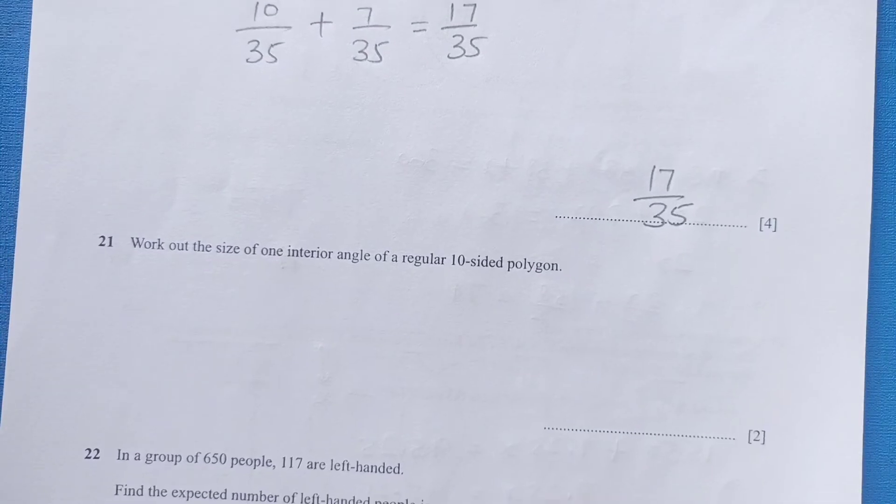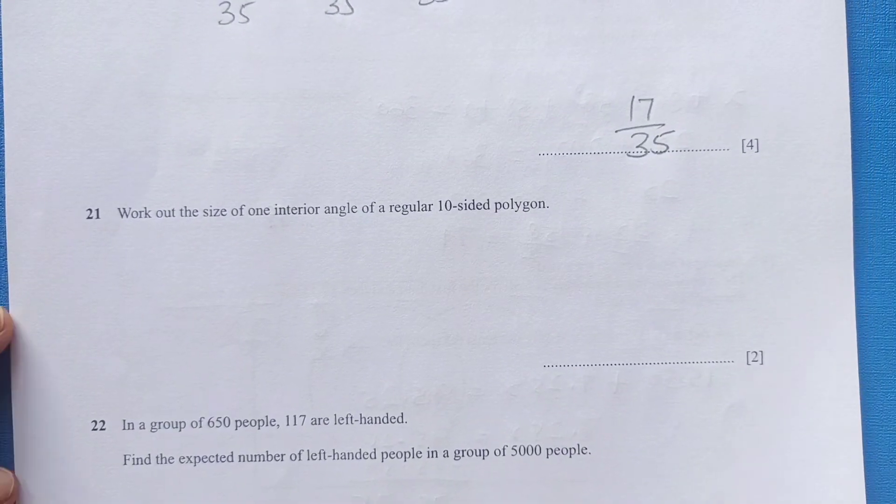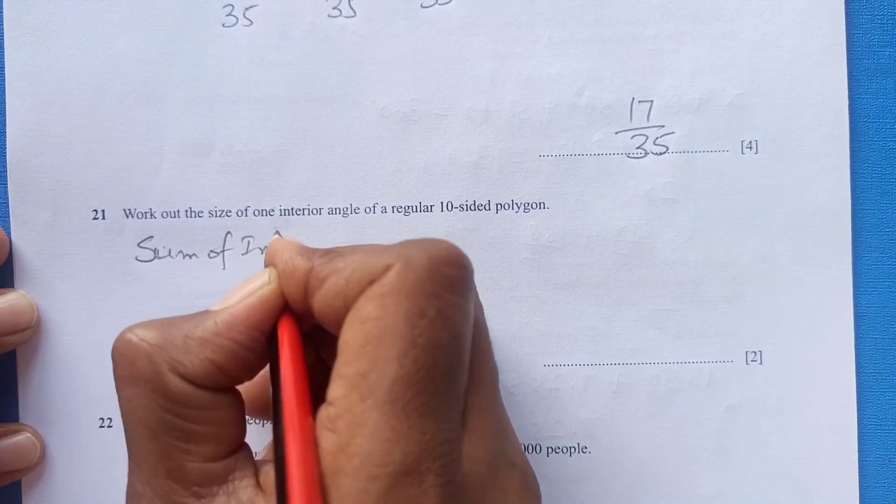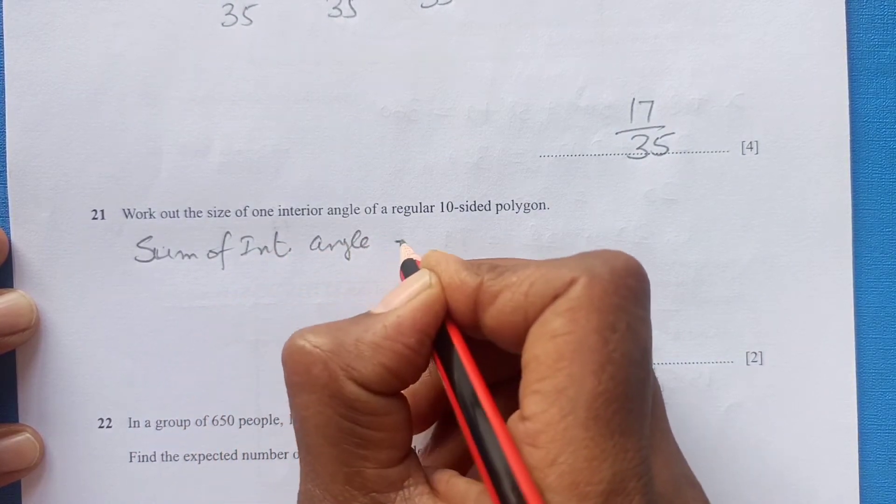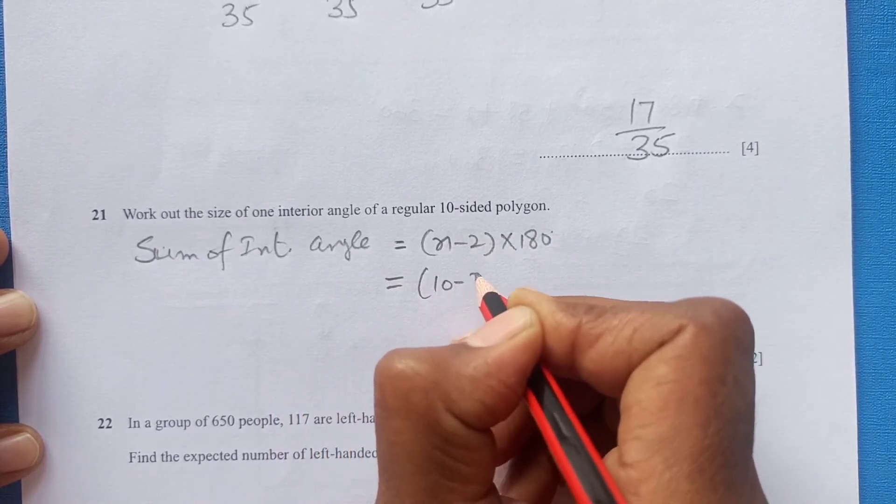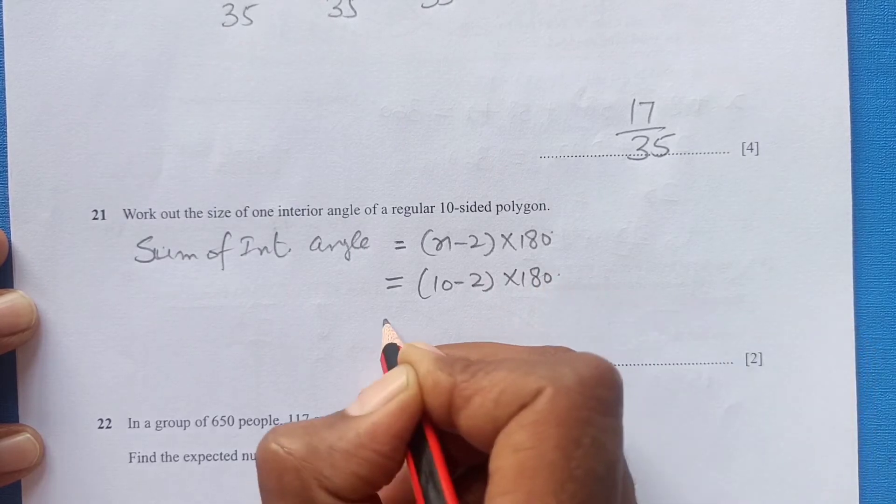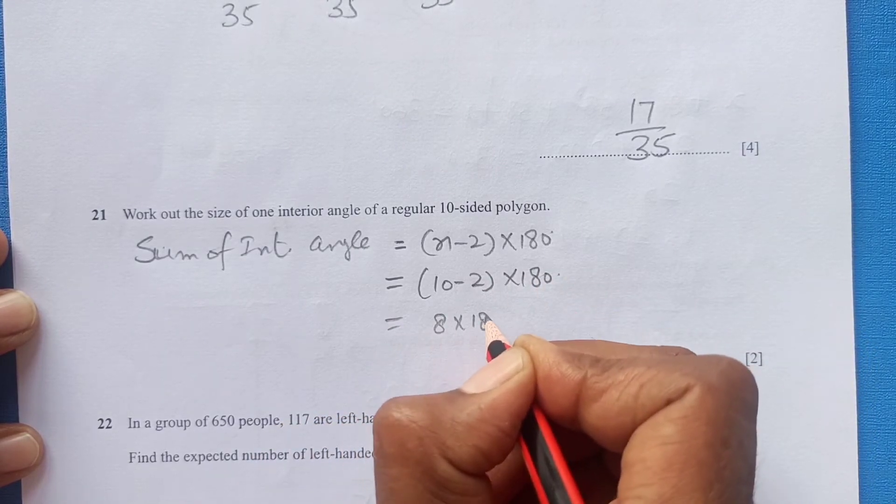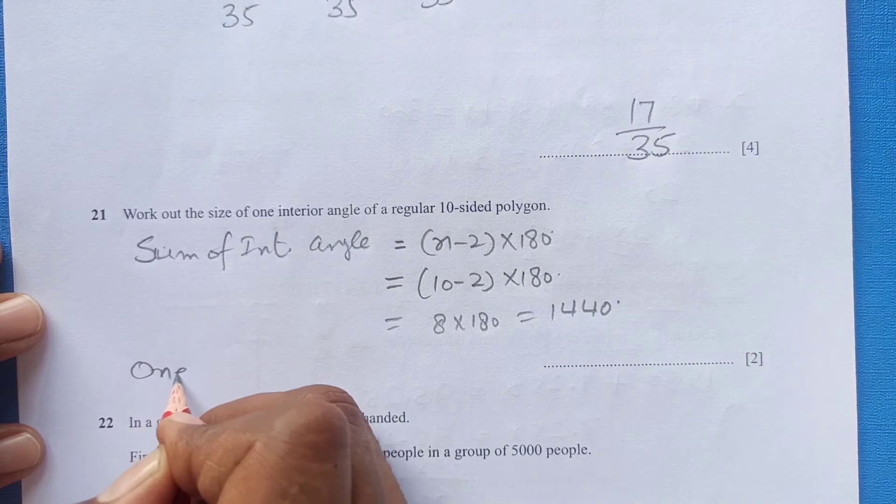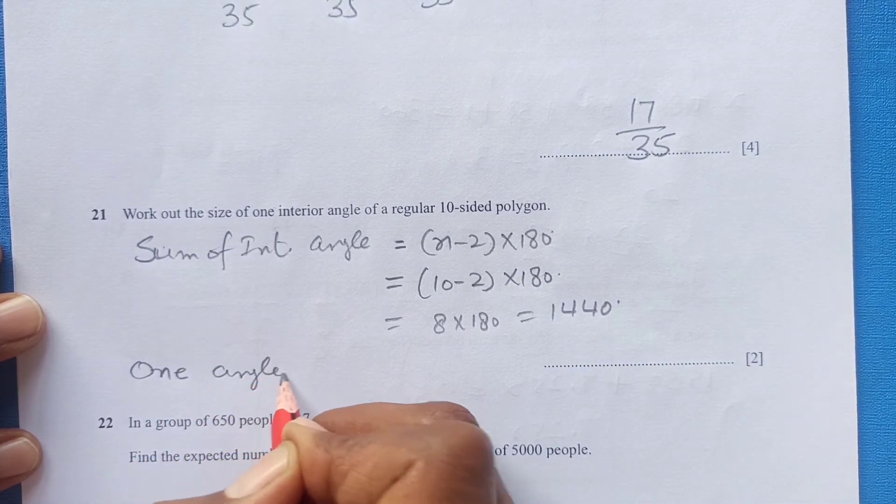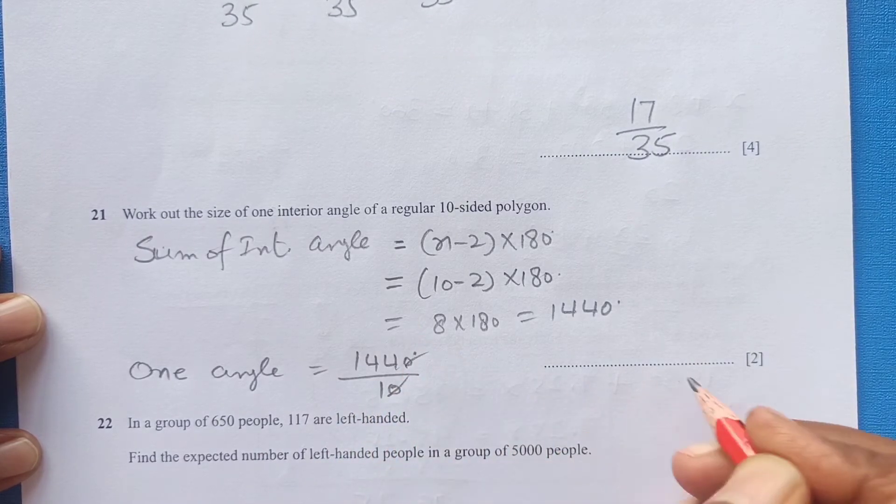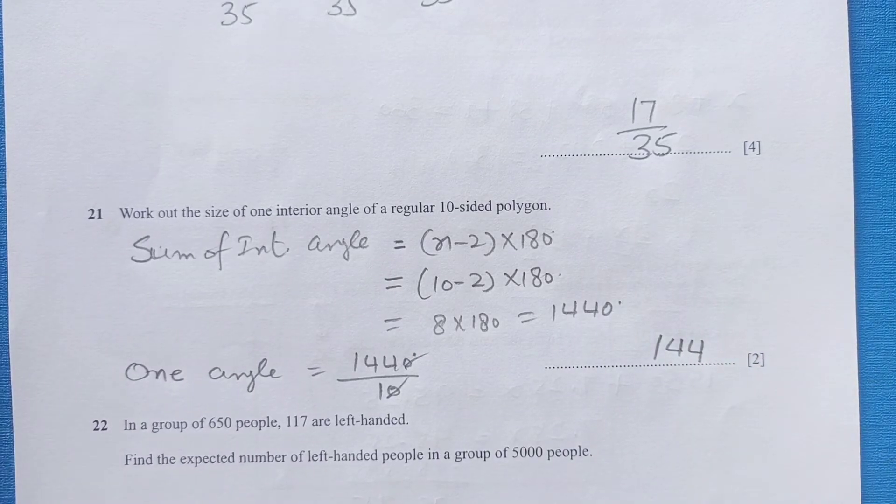Now work out the size of interior angles of a regular 10 sided polygon. So now sum of interior angles of a polygon is equal to n minus 2 times 180. So now n we have here 10, so 10 minus 2 times 180. This is 8 times 180. This comes out to be 1440. So this is sum of the angles. We are looking for 1 angle. So measure of 1 angle will be 1440 divided by 10. So it will be 144.